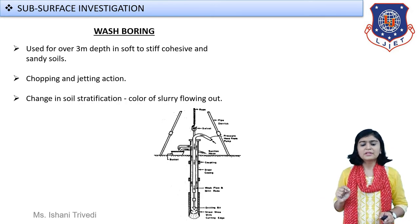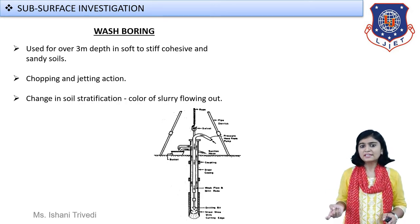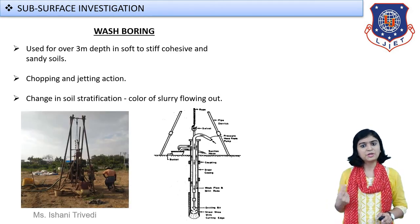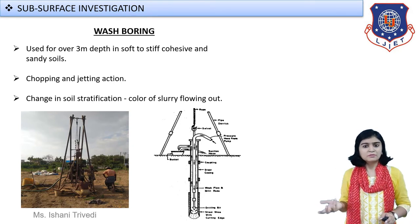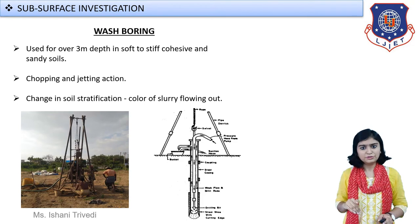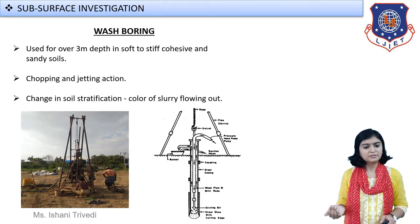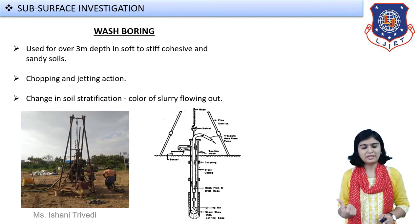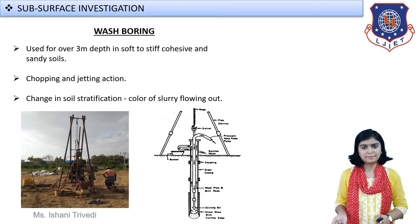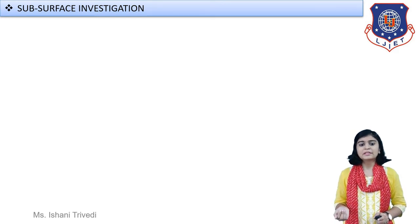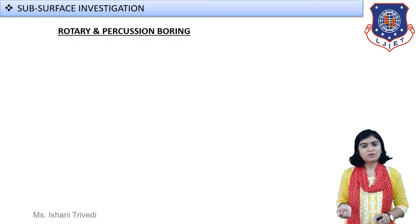This particular action of flushing water inside, converting it to soil slurry, and taking it back is known as the chopping and jetting action. As mentioned, the change in soil slurry color decides the type of soil being dealt with. The picture I showed you is the real arrangement of how wash boring takes place on site, and you have likely seen this type of boring on a construction site as well.